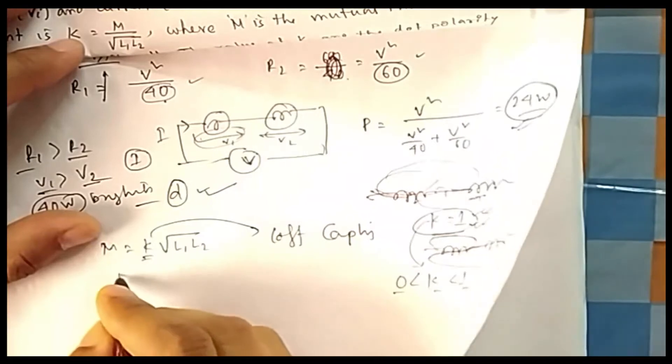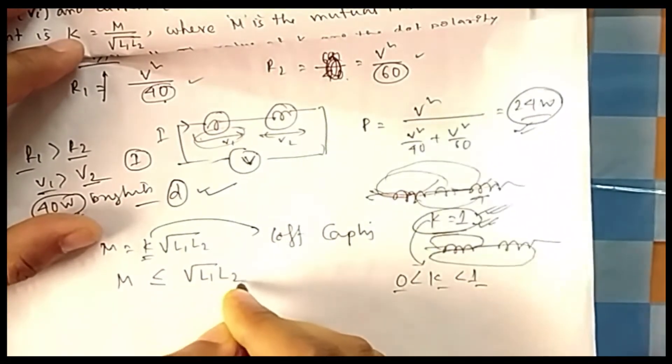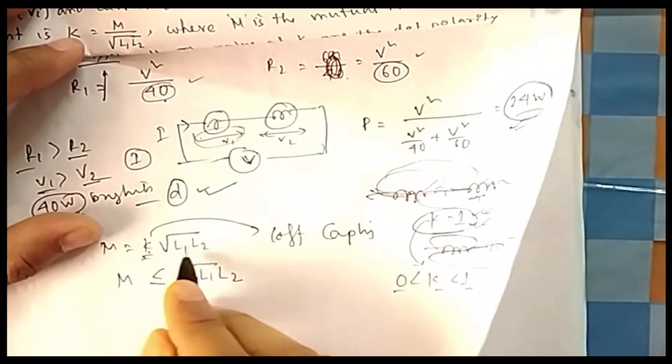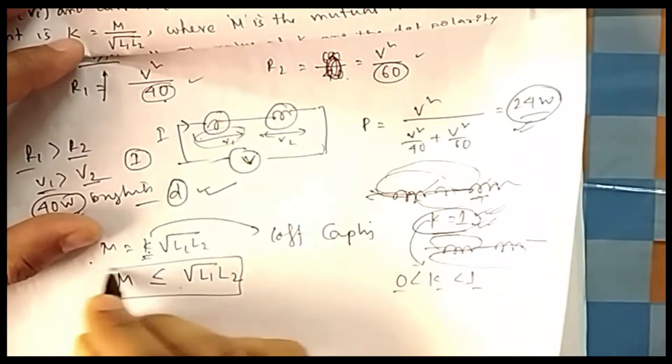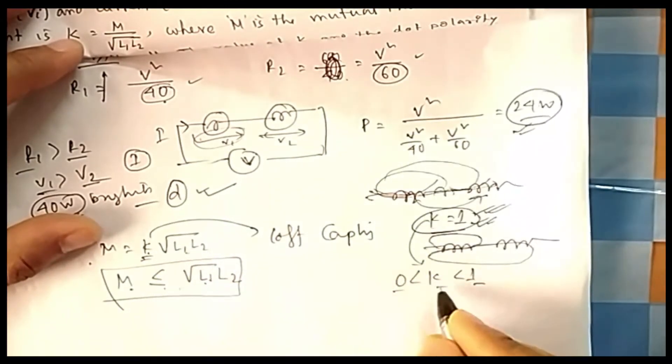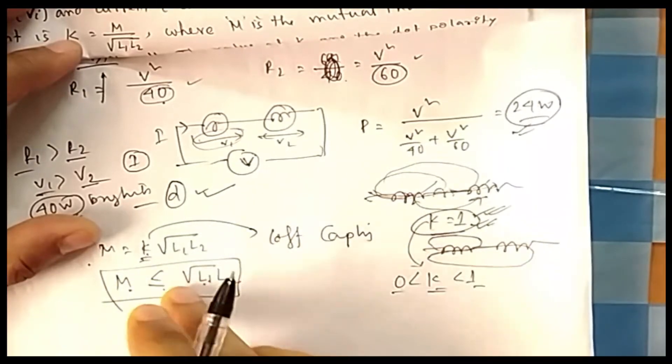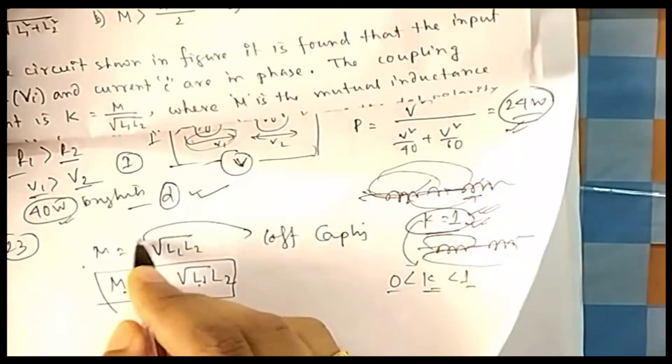k = 0 means no flux is shared; k = 1 is the maximum. Therefore M can be at most √(L1·L2). If k = 0.5, then M is half of √(L1·L2). Since k is a fraction between 0 and 1, multiplying by k always reduces the value — for example, 100 × 0.1 = 10 — so M is always less than or equal to √(L1·L2).